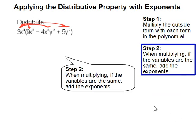Step two: when multiplying, if the variables are the same, add the exponents. So 3x³ times 9x². 3 times 9 is 27, and x³ times x² is x⁵. We add the exponents.